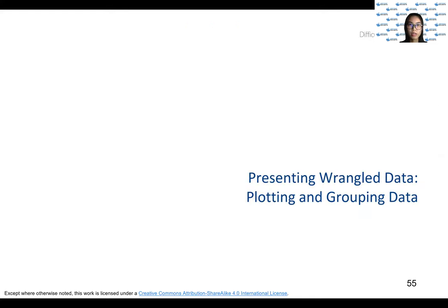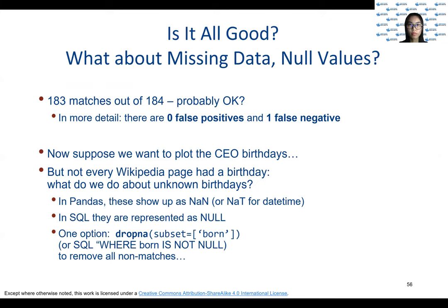Finally, we want to present the data that we've cleaned. First of all, is everything good? Do we have any missing values, and what do we do about them? One option is to just drop the rows with nulls in certain columns using dropna — this will drop rows if they have null values in any column. Here we restrict where the nulls are looked for, using subset equals 'born'. Another option is to fill in default values such as the mean or mode, but this skews the data. For plotting, it is fine to leave nulls as they will be ignored.